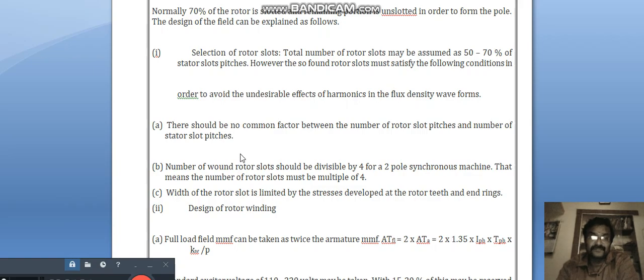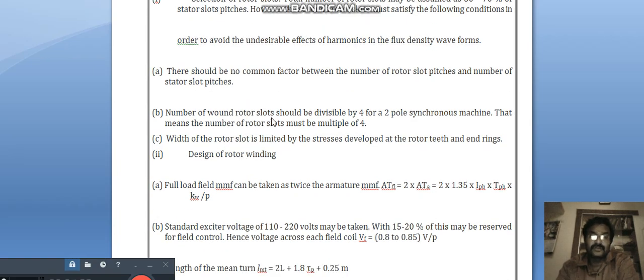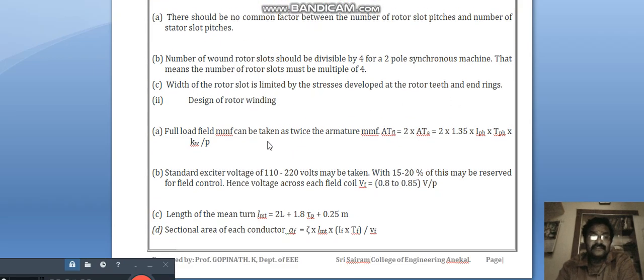There should be no common factor between the number of rotor slot pitches and number of stator slot pitches. Number of wound rotor slots should be divisible by 4 for a two-pole synchronous machine, that means the number of rotor slots must be multiple of 4. Width of the rotor slot is limited by the stress developed at the rotor teeth and the end rings.